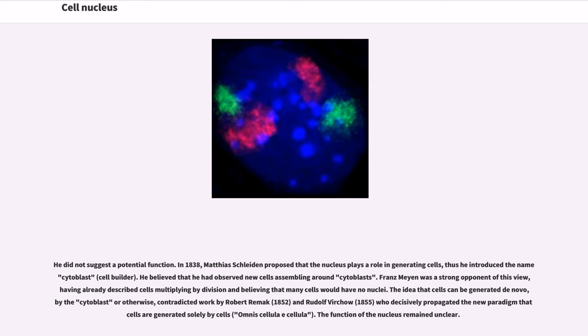In 1838, Matthias Schleiden proposed that the nucleus plays a role in generating cells, thus he introduced the name cytoblast, cell builder. He believed that he had observed new cells assembling around cytoblasts. Franz Mayen was a strong opponent of this view, having already described cells multiplying by division and believing that many cells would have no nuclei. The idea that cells can be generated de novo, by the cytoblast or otherwise, contradicted work by Robert Remak, 1852, and Rudolf Virchow, 1855, who decisively propagated the new paradigm that cells are generated solely by cells, omnis cellula e cellula. The function of the nucleus remained unclear.